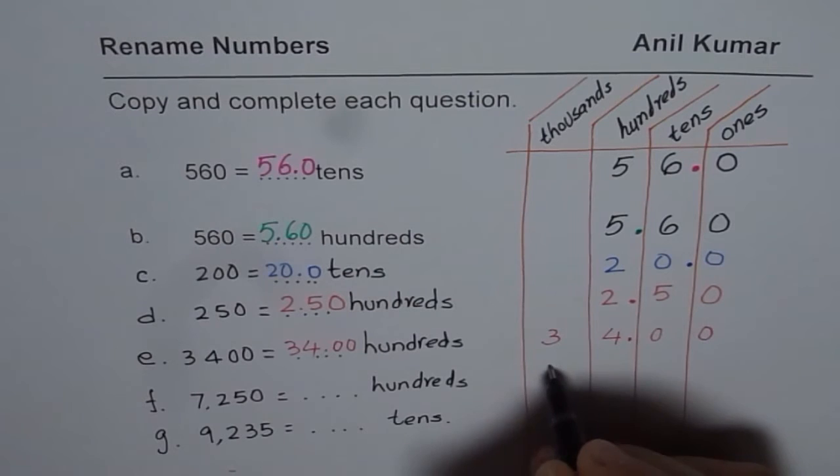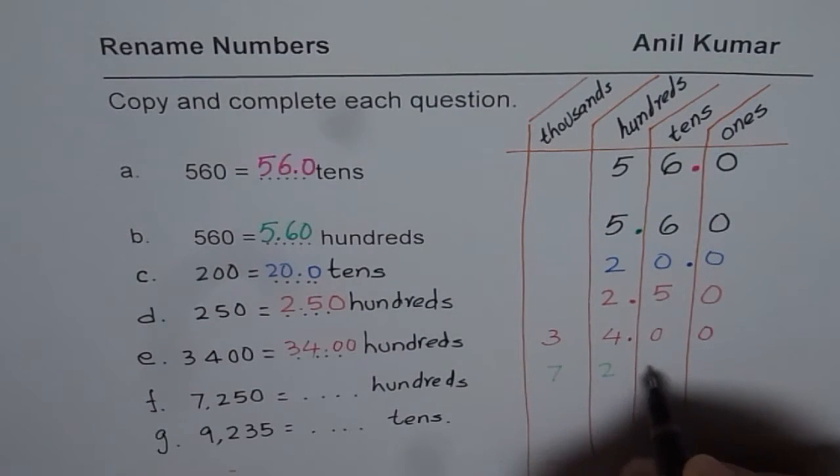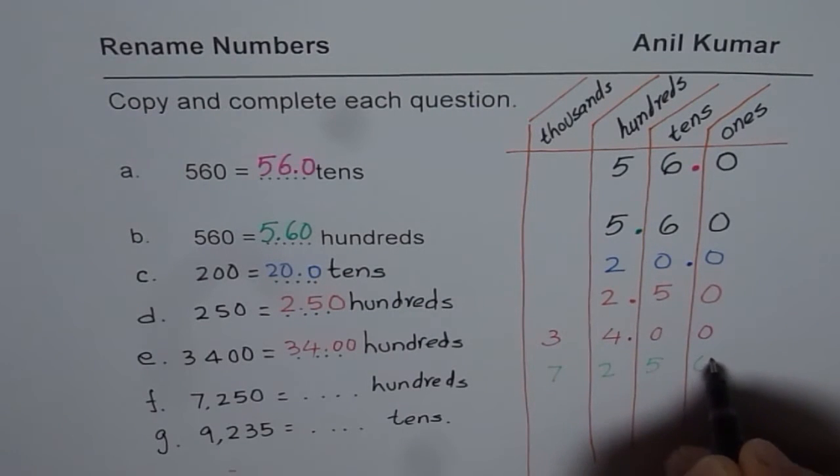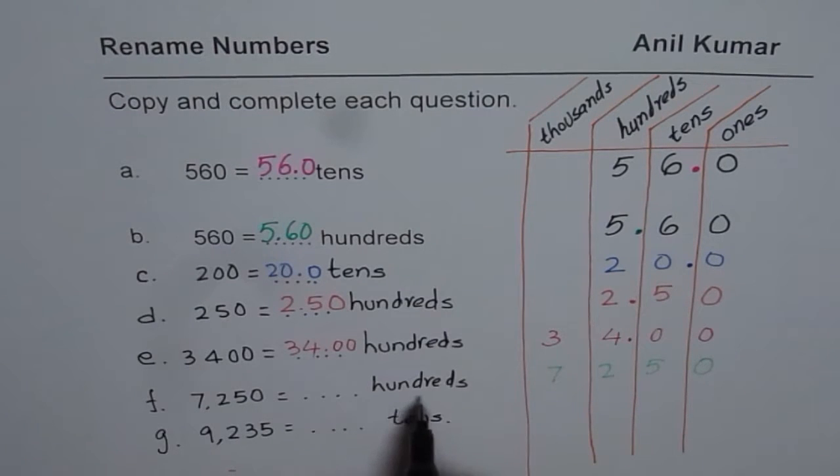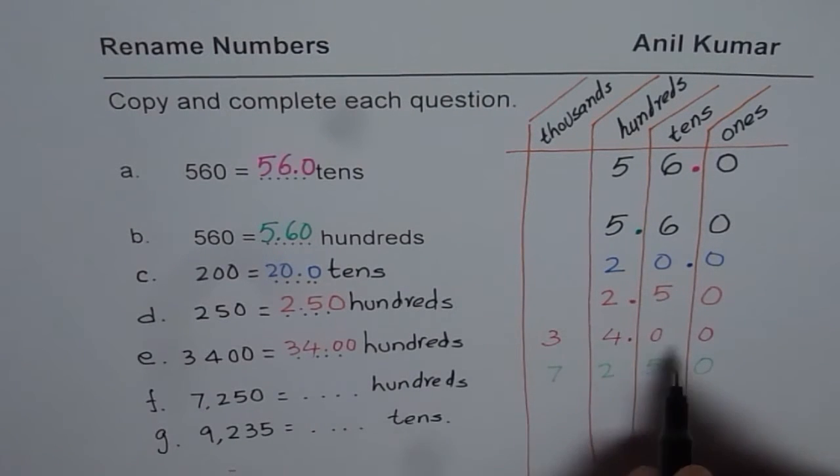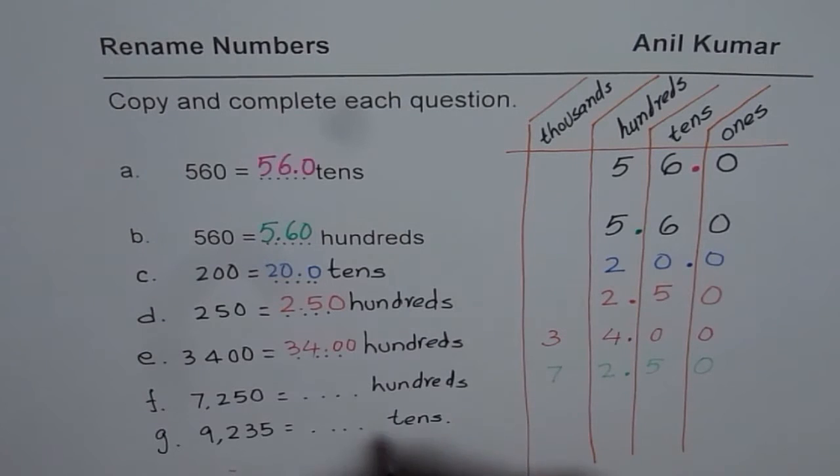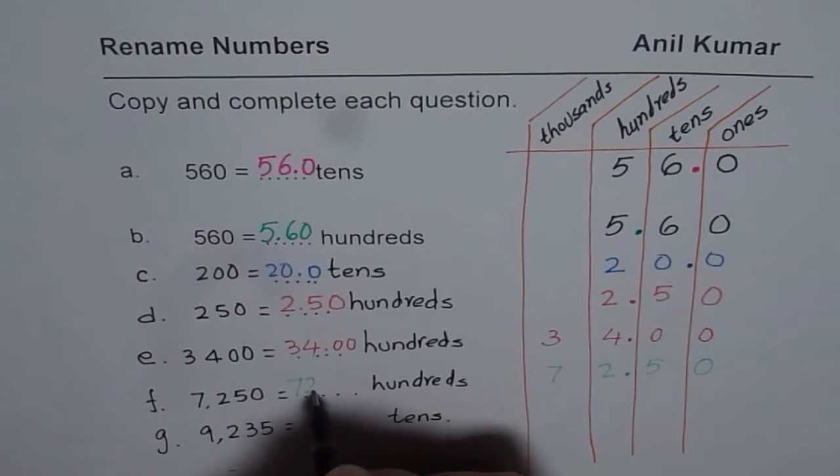Let us continue. We have 7,250. You can pause the video now and answer these two questions. You need to rename it to hundreds. That means decimal should come right there. So we get 72 decimal 5 0 hundreds.